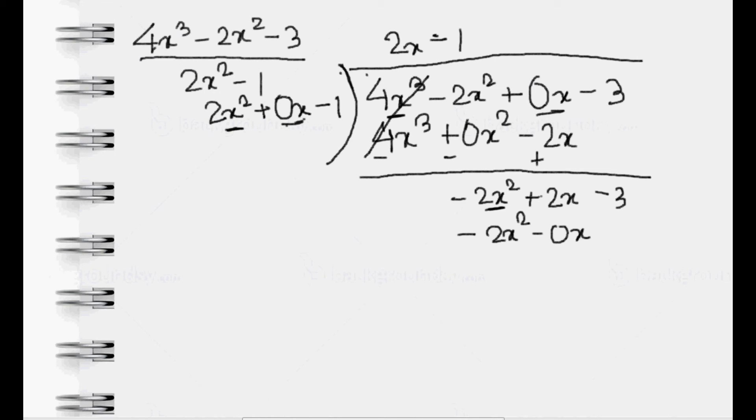0x minus -2x². -2x² and +2x² cancel out each other. Plus 2x, and -3 and -1 is equal to -4. 2x - 4 is the remainder.